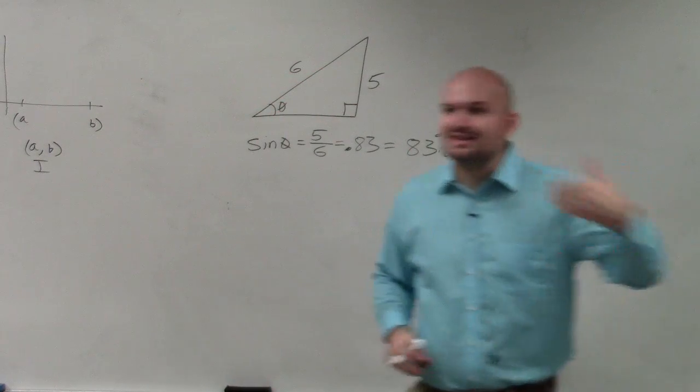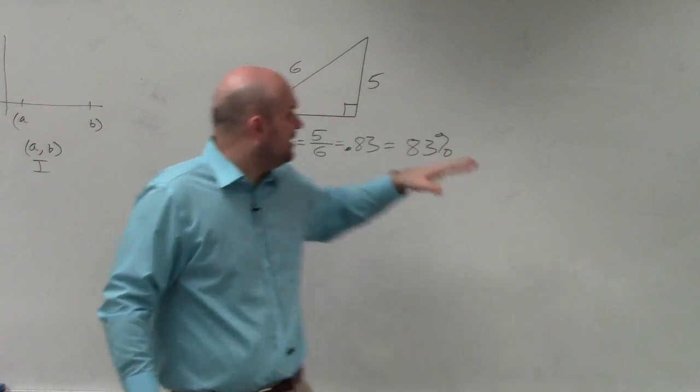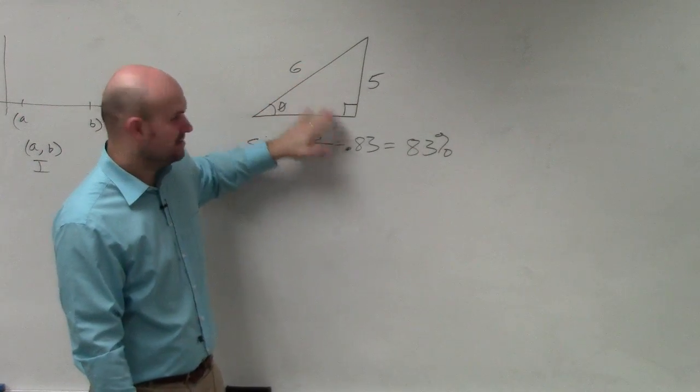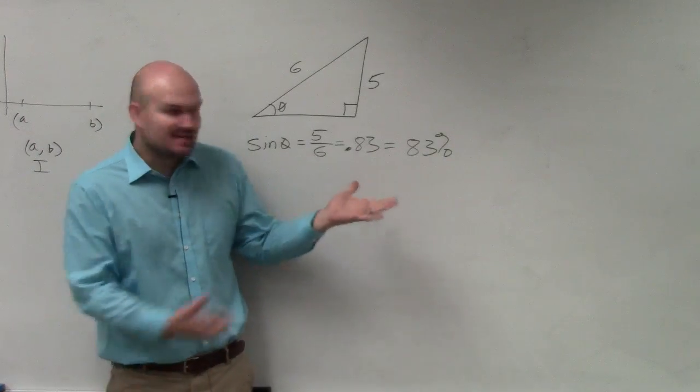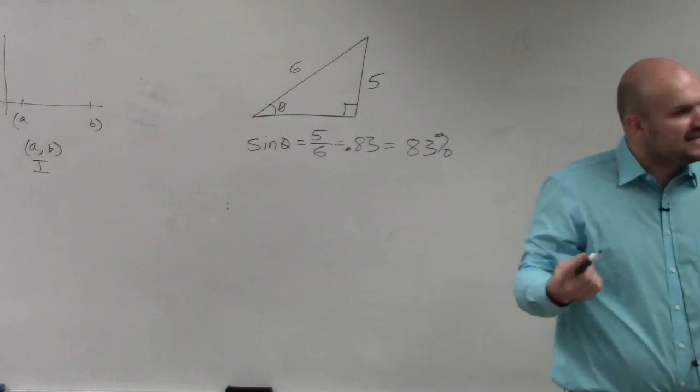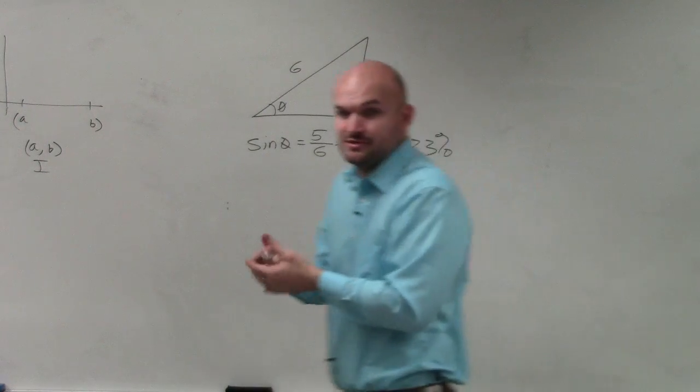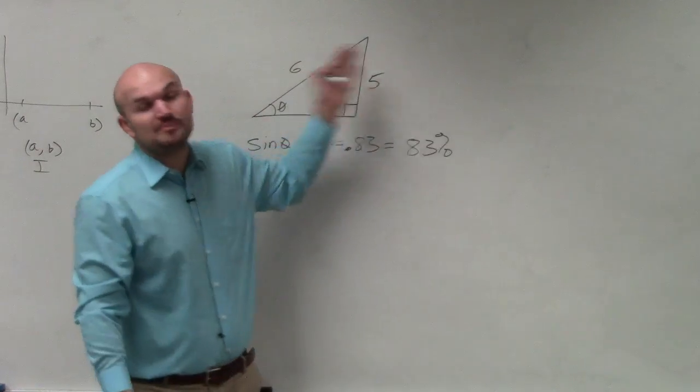What that means is the length of the opposite side is 83% of the length of the hypotenuse. That's what that 0.83 means. This is 83% of that length. That's what the sine is basically telling us, is how much bigger is the hypotenuse? Well, this is 83% of that value.